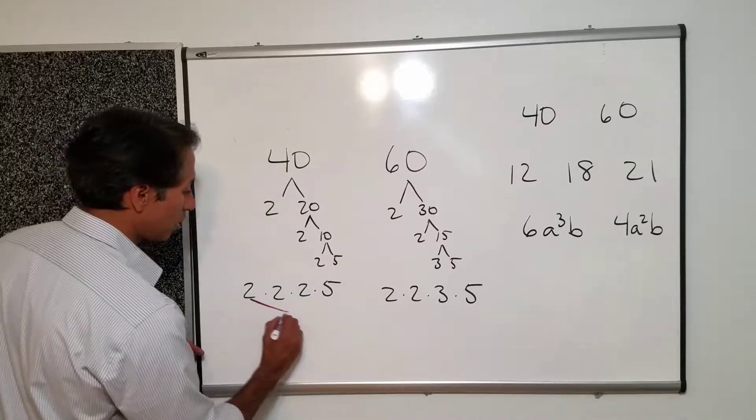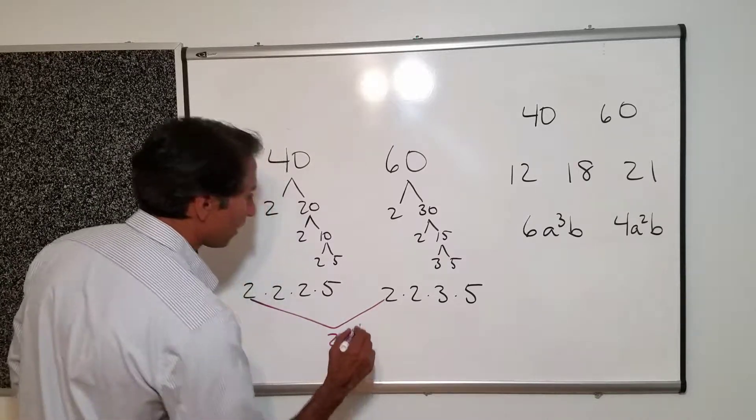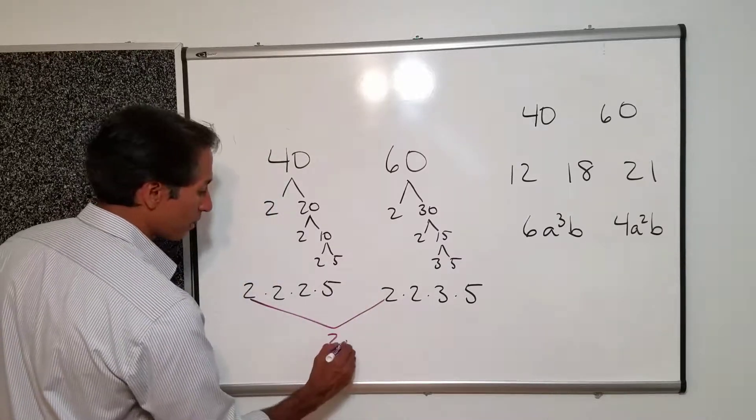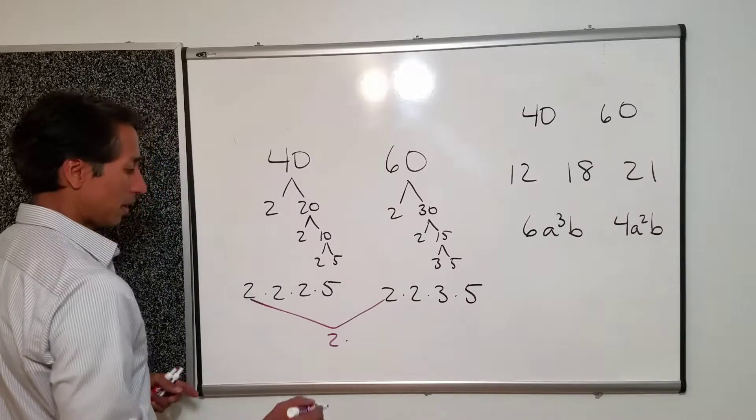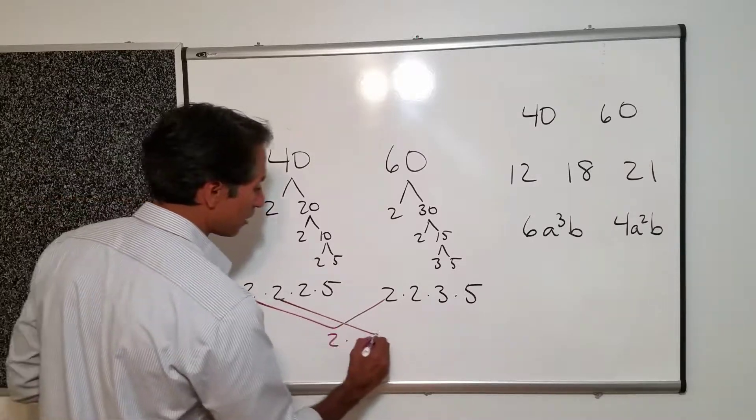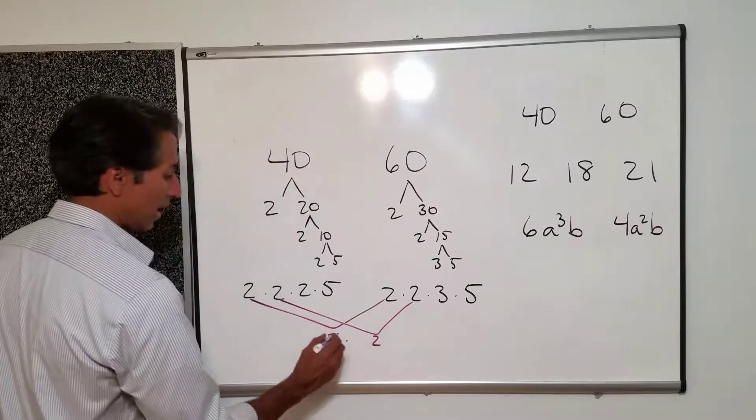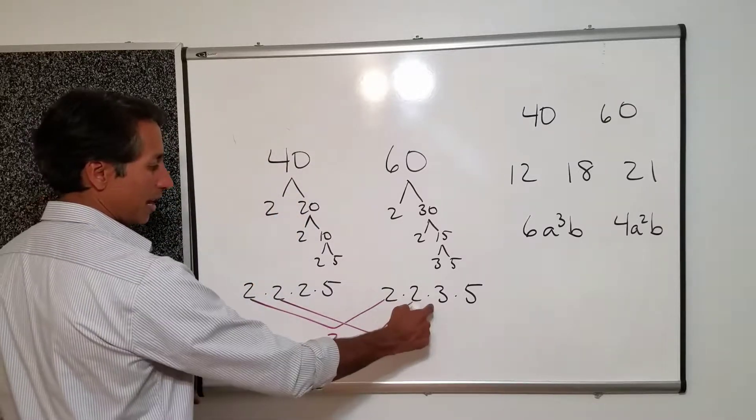So if we take a 2 from this guy we take a 2 from this guy. And because these are factors we're going to put that multiplication sign in between. I'm going to take out another 2 and another 2 and what else? Do I have another 2? I don't.